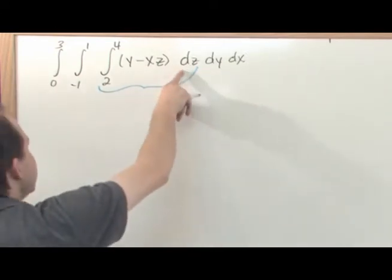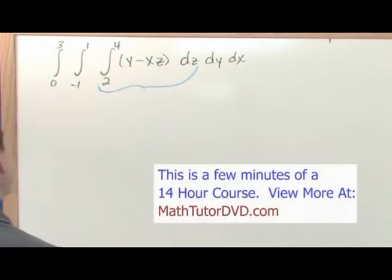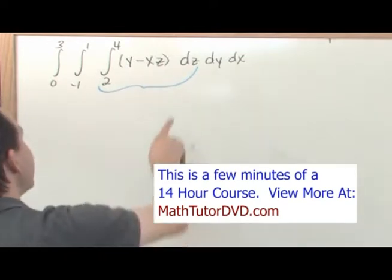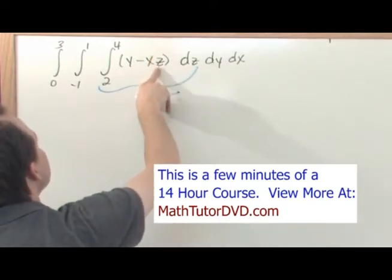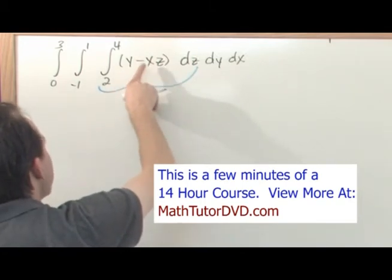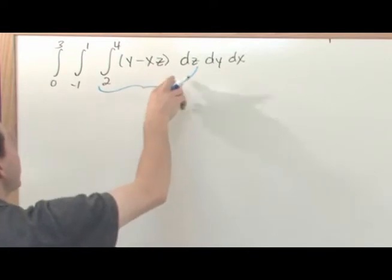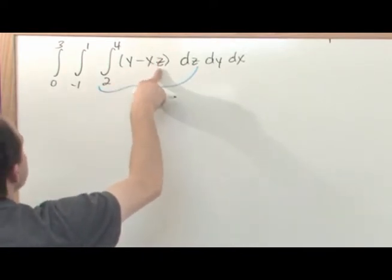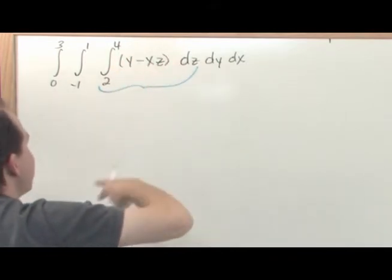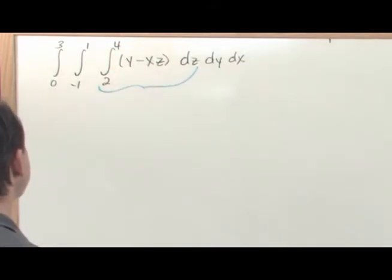When you're integrating along z, nothing is different from your double integrals — it's just going to have an extra integral sign. We're integrating over z, so anything else, x or y, is just a constant. You must get to the point where you can say: I'm integrating along z, so x and y are just numbers. Treat them exactly as constants when doing the integration.